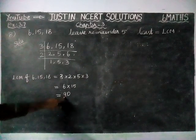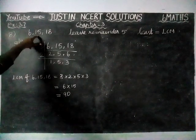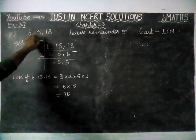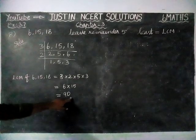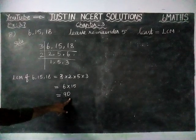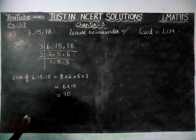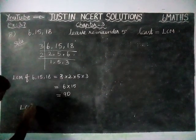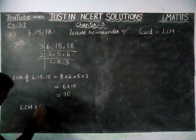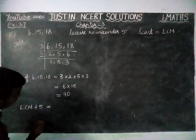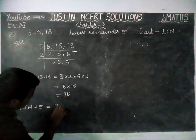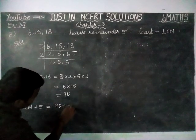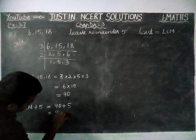In the question, when we are dividing by 6, 15, and 18, all these numbers should leave a remainder of 5. So with this LCM, we are going to add 5. LCM plus 5 is equal to the required answer. LCM value is 90, so 90 plus 5 is equal to 95.